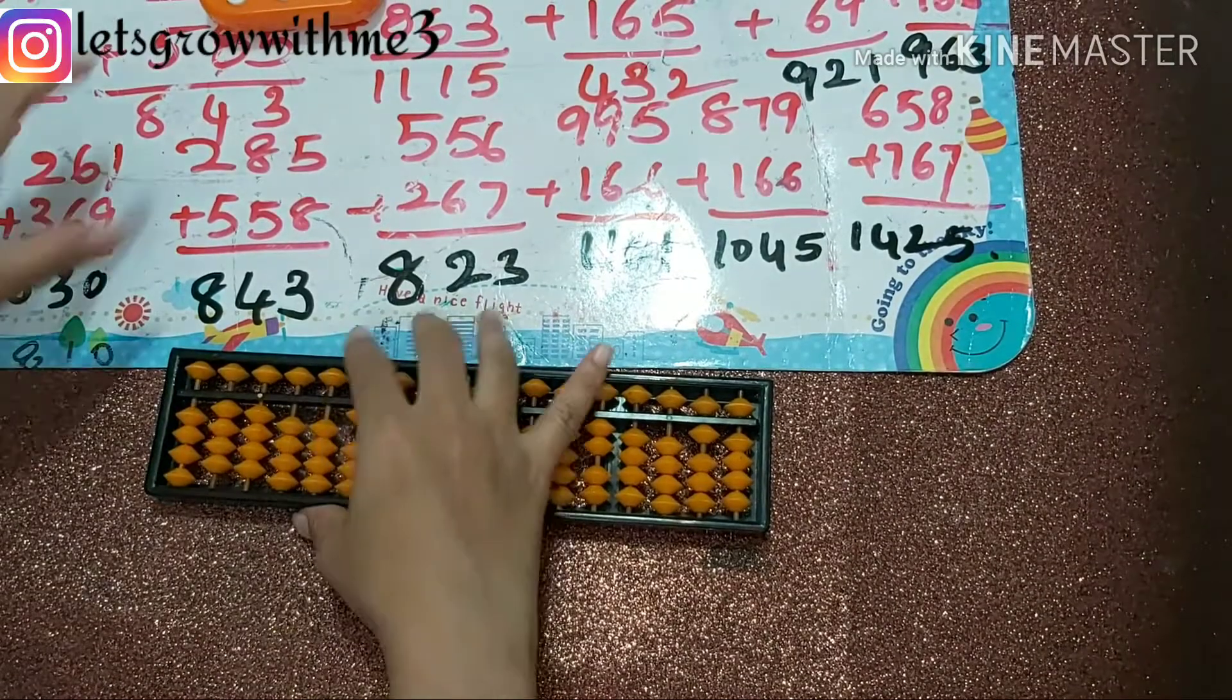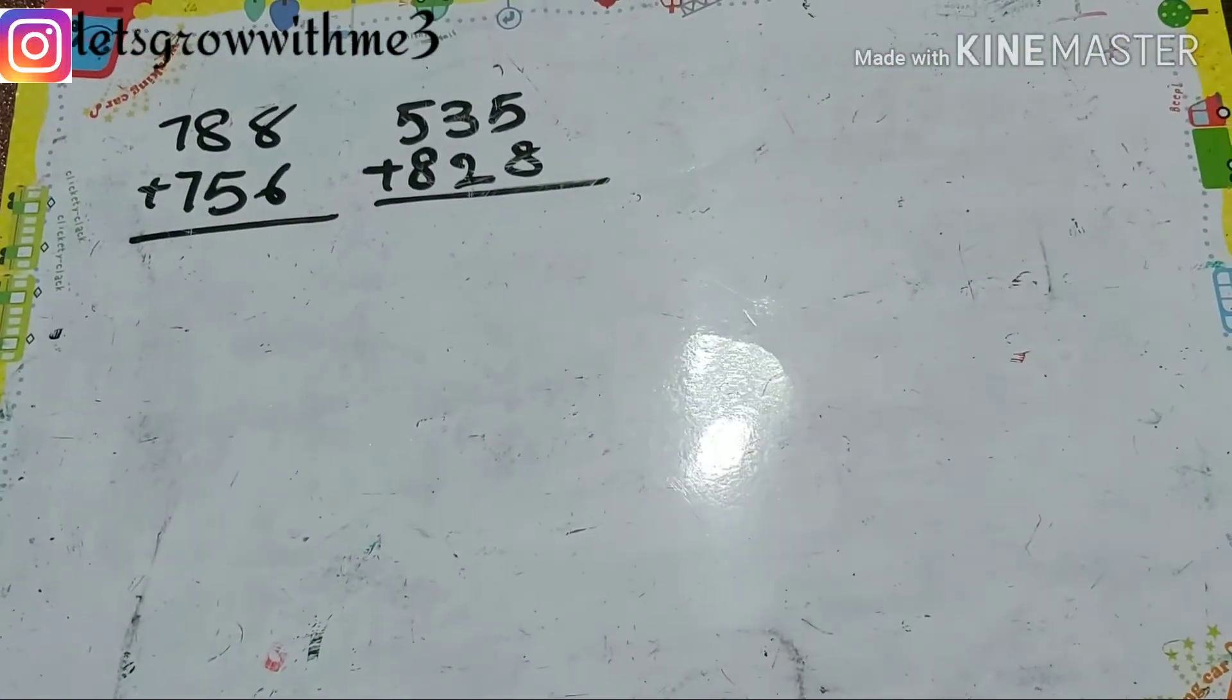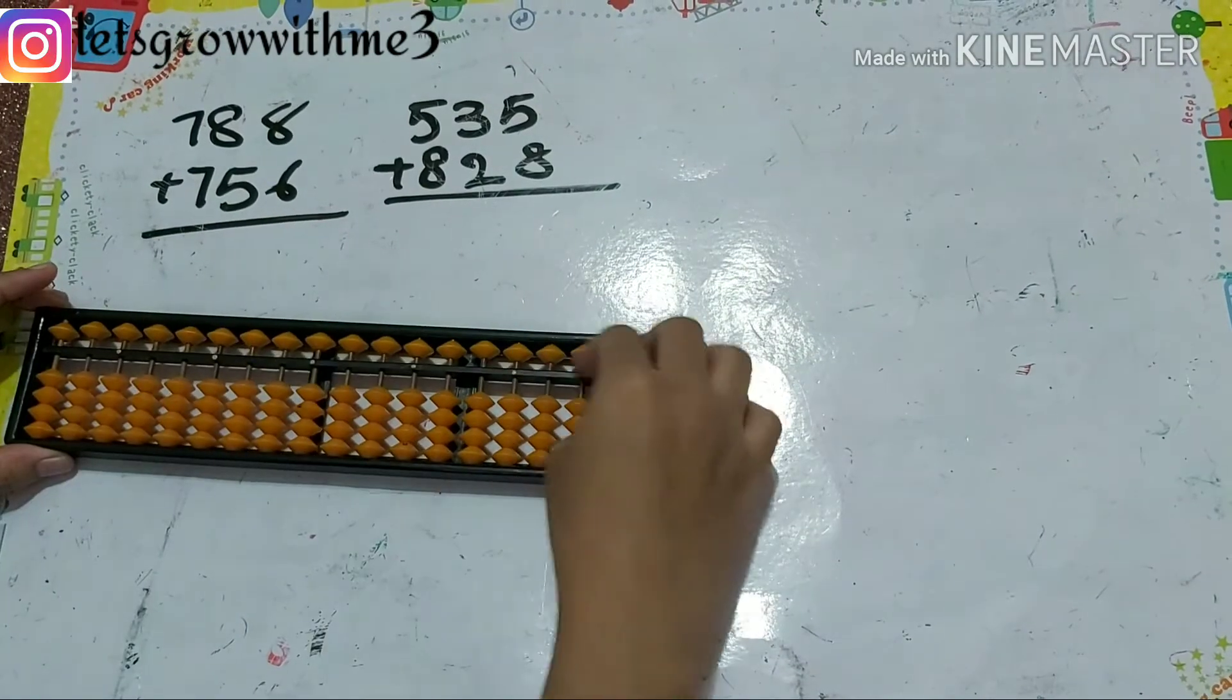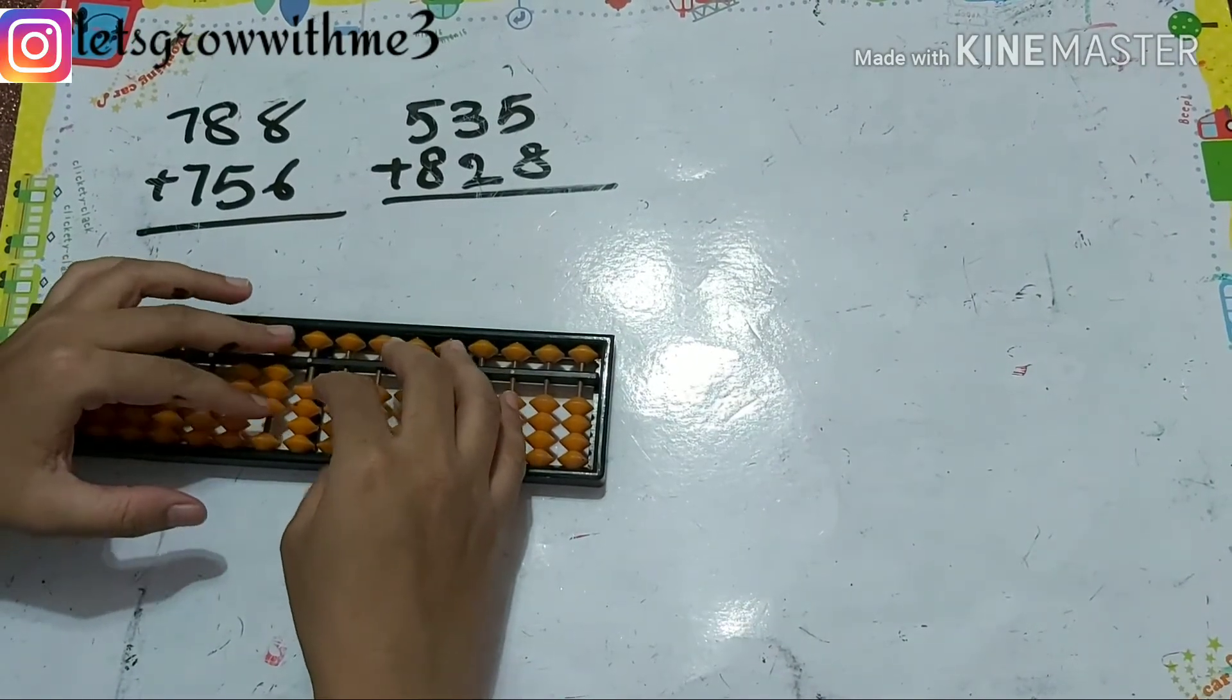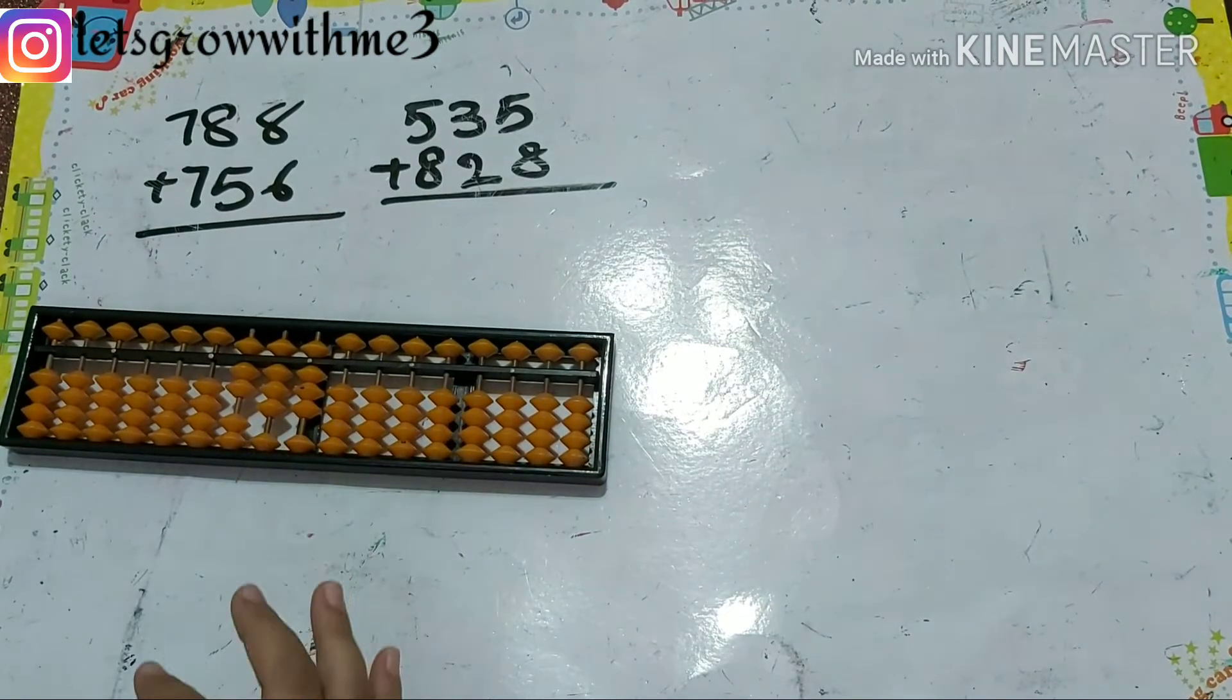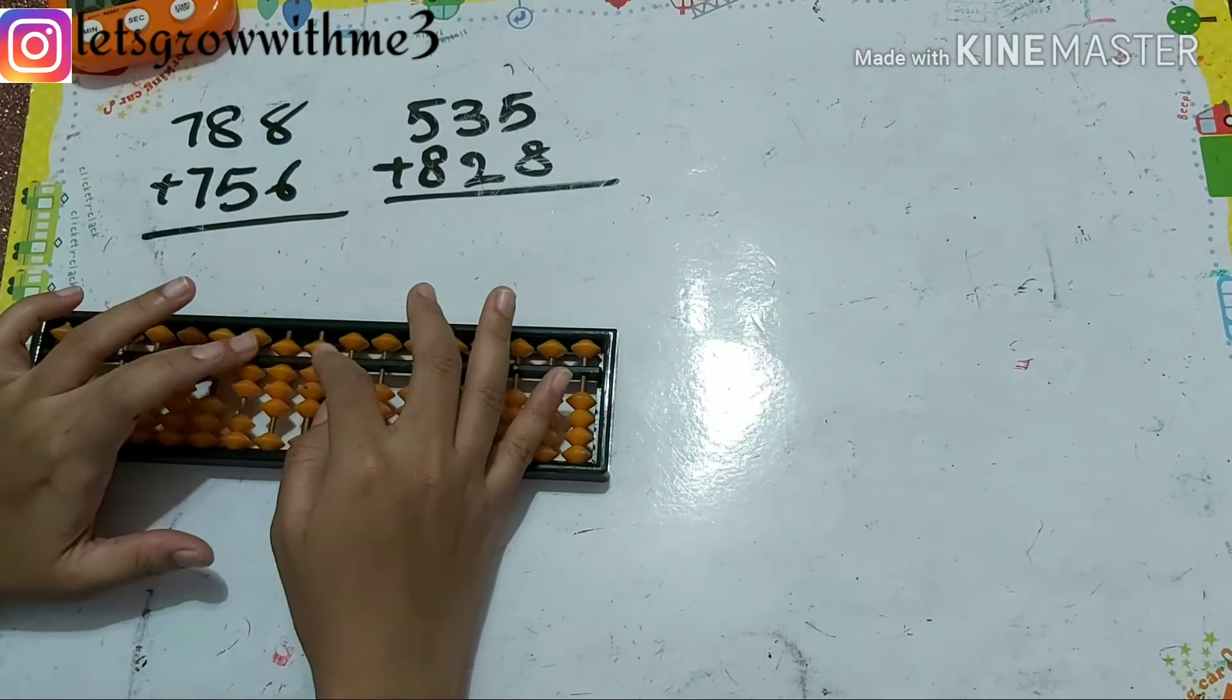Next one, we'll see some more problems. 788 plus 756. So papa up, mama up, babies up. 5, how to add 5 here?